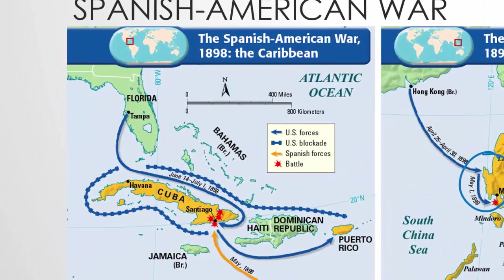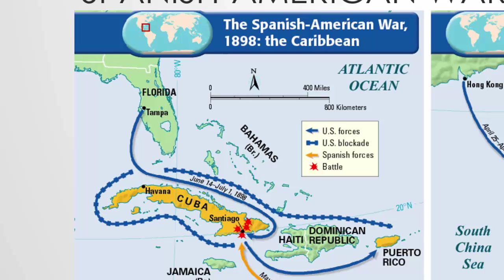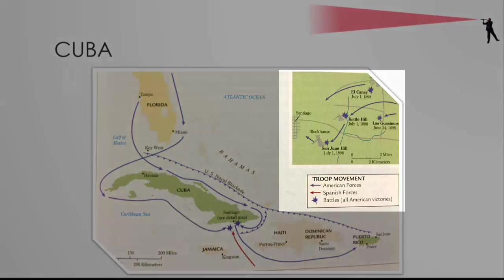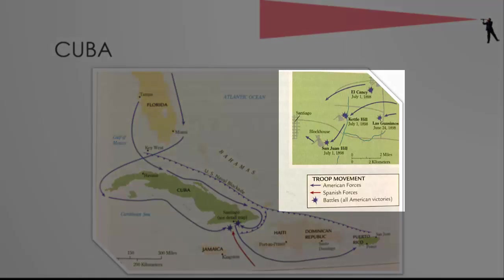Back in the Western Hemisphere, American forces landed in Cuba on June 22, 1898, and established a base at Guantanamo Bay. The military objective was Santiago, the capital city, just a few miles to the west. As shown on the map, there were four major clashes outside Santiago, and all of them were American victories.